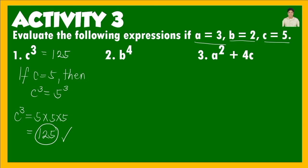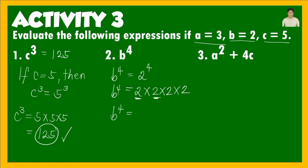Next, b to the fourth power. Since b=2, that is 2 raised to the fourth power, which becomes 2 times 2 times 2 times 2. Multiplying: 2×2=4, ×2=8, ×2=16. So b to the fourth power is equal to 16. Next, number 3: a squared plus 4c.